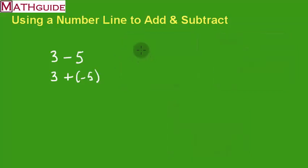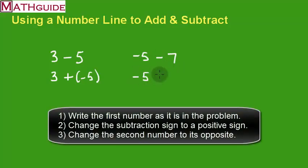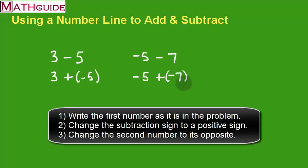Let's take a look at another example. Let's say we have negative five and we're going to subtract seven. You change the problem to addition and then you take the opposite of the second number. So it's a negative five minus seven — that's a positive seven — so you change it to the opposite of seven, which is negative seven.